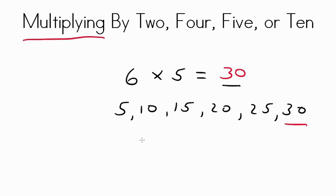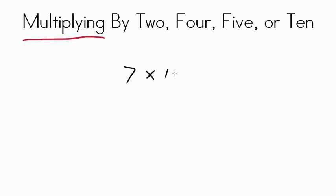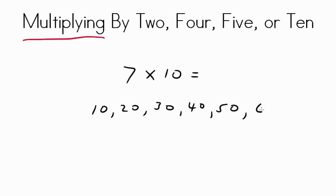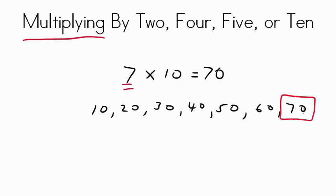Remember, the reverse is the same as well, so 5 times 6 will also equal 30. Another fun one is multiplying by 10s. For instance, if I asked you what 7 times 10 was, we could easily skip count up. So if we did 7 groups of 10: 10, 20, 30, 40, 50, 60, 70. So we have a product of 70. Notice when you're multiplying with 10s, your answer is the number you multiplied by 10 plus an added 0.